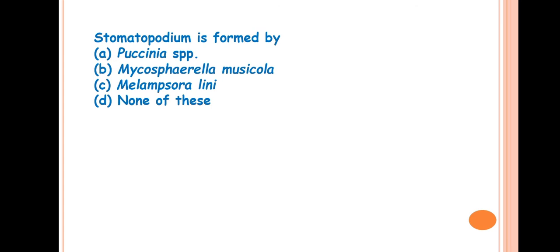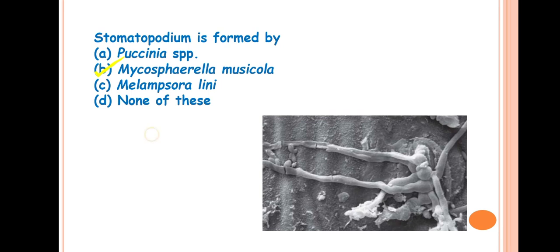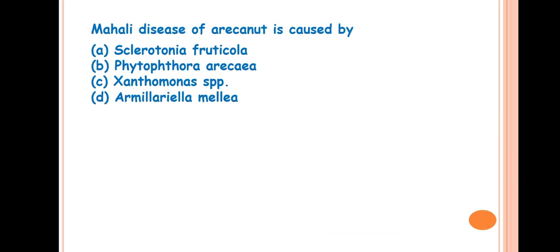Next question is, stomatopodium is formed by? Answer is Mycosphaerella musicola. This is the causal organism of Sigatoka leaf spot of banana. This pathogen enters into the plant cell or the leaf cell through the stomatal pore. After establishment, it produces a special structure that is the stomatopodium. Here you can see the stomatopodium that is produced over the stomatal surface by the fungus.